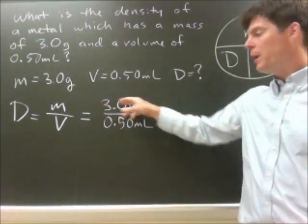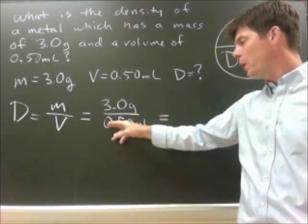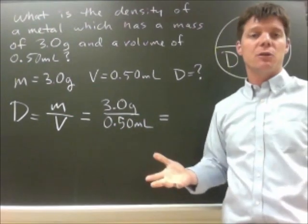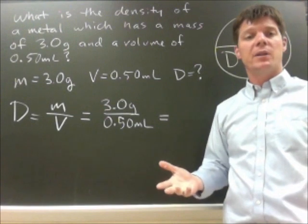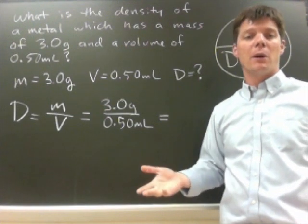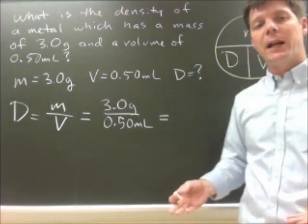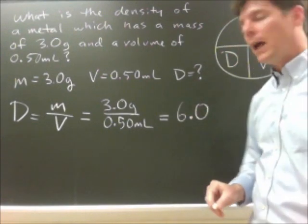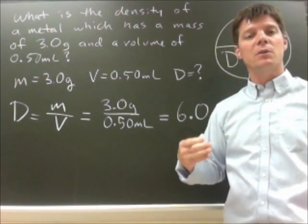So I can see that dividing 3.0 by 0.50 is going to give me an answer of 6. 3.0 has two sig figs, 0.50 also has two sig figs, so my final answer should be reported with two significant digits. Three divided by 0.5 is six, so my final answer will be 6.0 and my unit will be grams per milliliter.